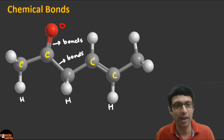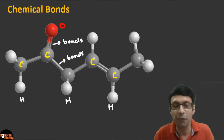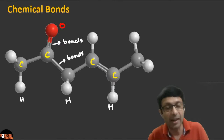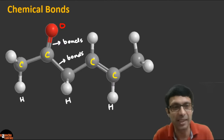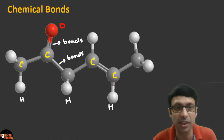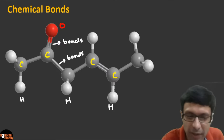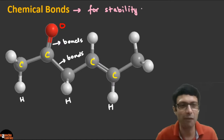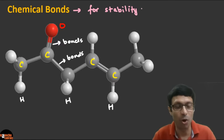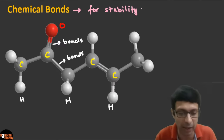Why do atoms form chemical bonds? Just like everyone wants a stable life and a stable job, even atoms want stability, and that is why they form chemical bonds so that the resultant molecule is stable and each atom in it is stable. A molecule can consist of one atom like monoatomic molecules, but usually contains two or more atoms from the same or different elements.